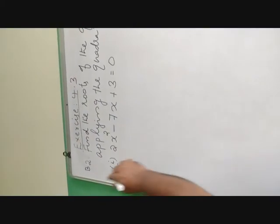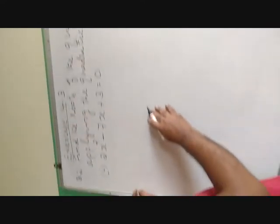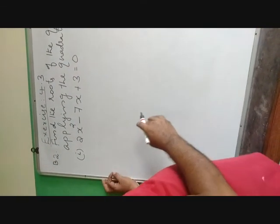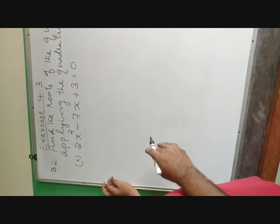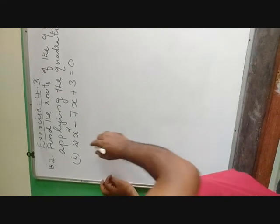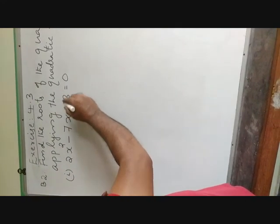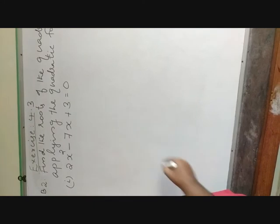Exercise 4.3, question number B2: find the roots of the quadratic equations by applying the quadratic formula. The same question from equation number 1 we can use here. The first question is 2x squared minus 7x plus 3 is equal to 0.